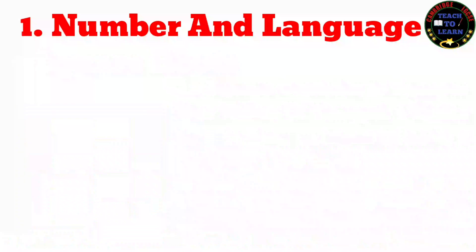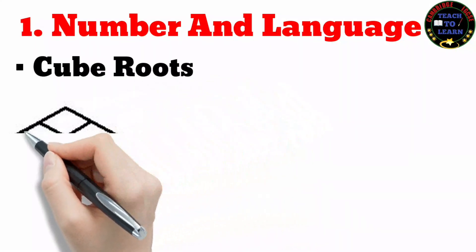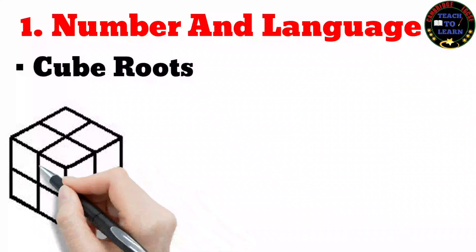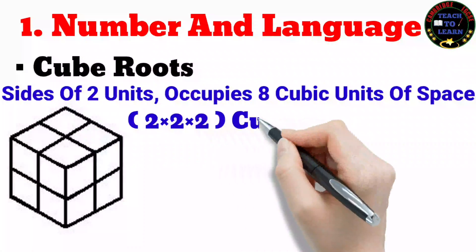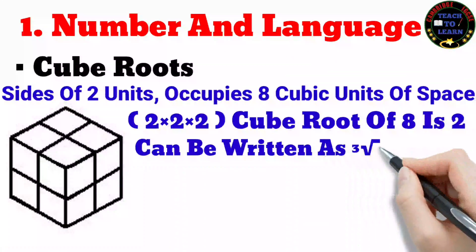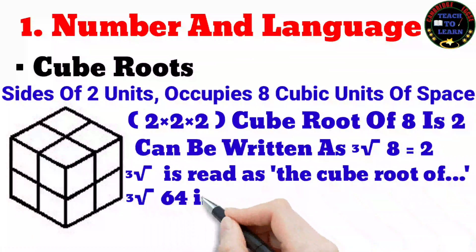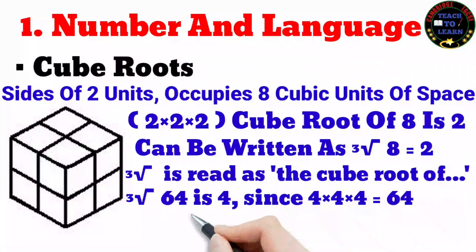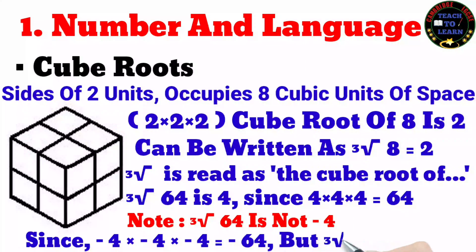Cube roots: the cube shown has sides of 2 units and occupies 8 cubic units of space, written as 2 × 2 × 2, so the cube root of 8 is 2, written as ∛8 = 2. The cube root of 64 is 4, since 4 × 4 × 4 = 64. Note that the cube root of 64 is not −4, since (−4) × (−4) × (−4) = −64. But the cube root of −64 is −4.